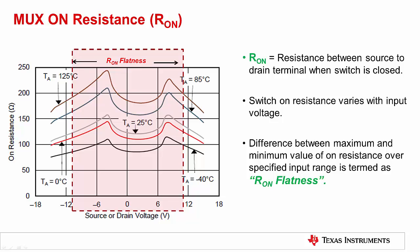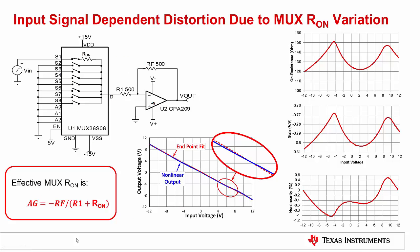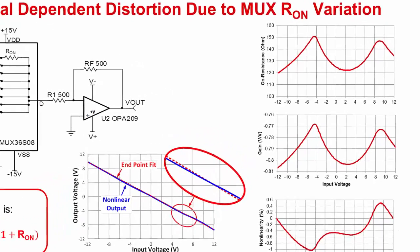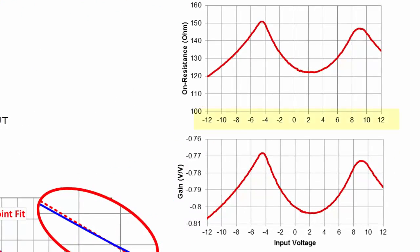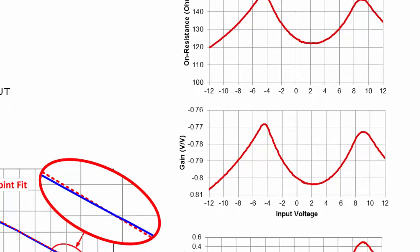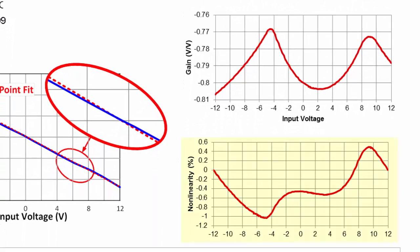We will cover the distortion in detail later and show how some circuit configurations can virtually eliminate this problem. This slide illustrates how the on resistance of a multiplexer can introduce a gain and non-linearity error if it is placed in series with an amplifier gain-setting resistor R1. Note that the on resistance directly adds to R1, creating an effective gain AG, given by the equation: AG equals negative RF divided by the sum of R_ON and R1. Notice that the value of R_ON is dependent upon the input signal. In this case, the input signal varies from negative 12 volts to positive 12 volts, and R_ON varies from about 120 ohms to 150 ohms due to the R_ON flatness limitations of the switch. Since the on resistance is changing with input signal, the gain will also change according to the input signal. This variation in gain versus input signal creates a non-linearity in the transfer function.